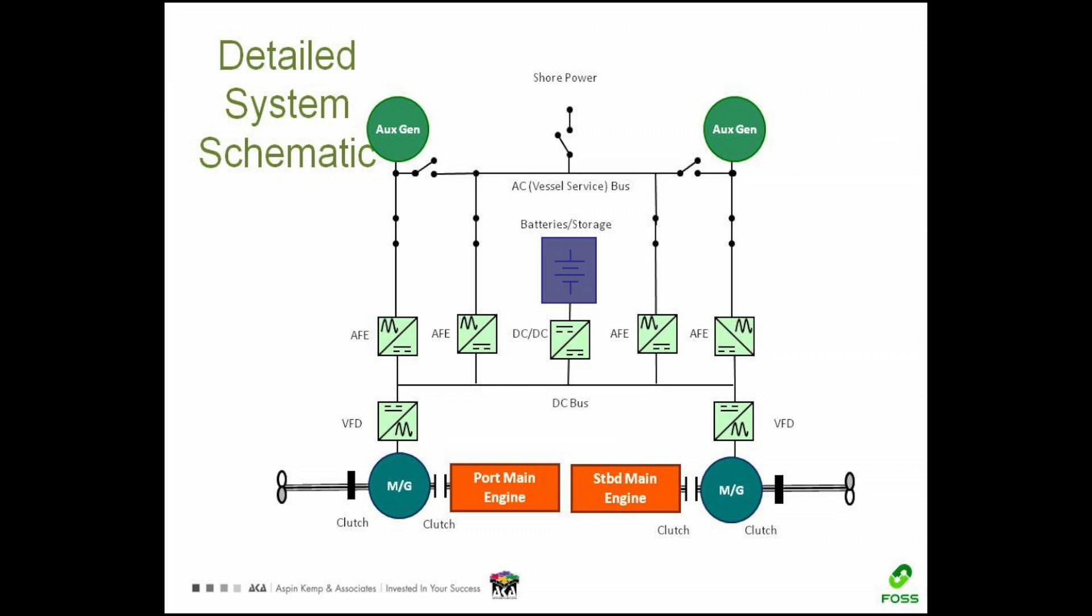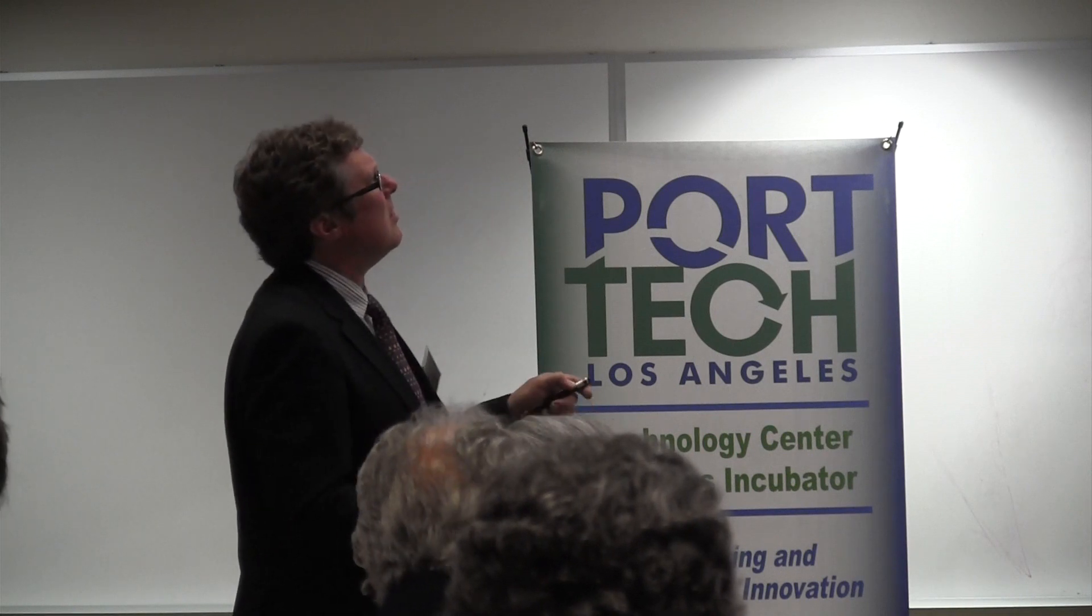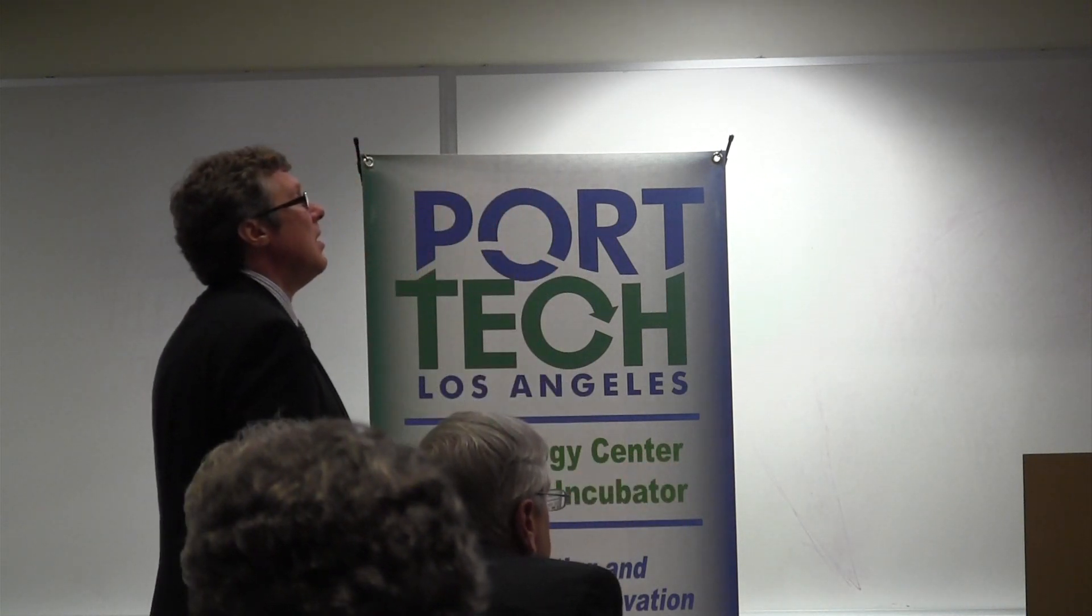Then we've got the energy storage and the DC-DC converter. And that DC-DC converter just allows you to move energy on and off, in and out of the batteries. This energy storage could be battery. It could be a mechanical form of storage, mass inertia storage. It could be an ultracapacitor. It could be a hydrogen fuel cell. We've built the system so that it can accommodate any form of energy storage. But basically, we'll use whatever is the best for the application and whatever is best as far as the technology can offer right now.